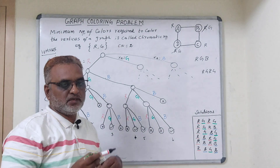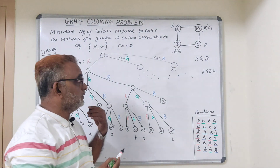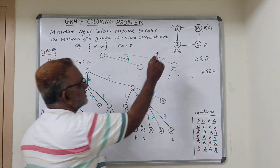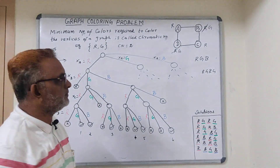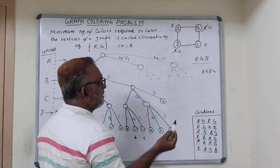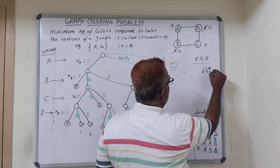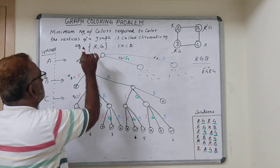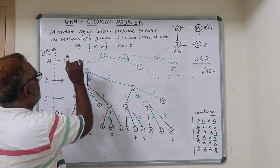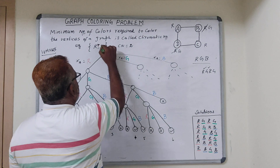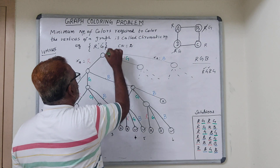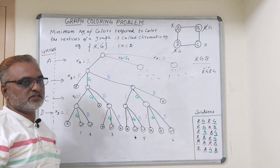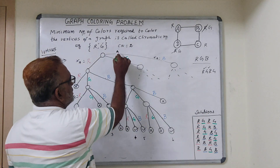What is the minimum number of colors required to color the graph? That is called the chromatic number. In this case we have four vertices and three available colors, but just by using only two colors I am able to color all the vertices satisfying the constraint. So the minimum number of colors required to color the vertices of a graph is called its chromatic number. Here, using just red and green is sufficient.